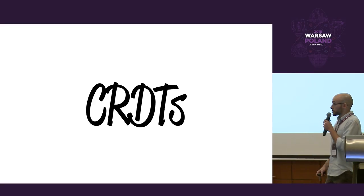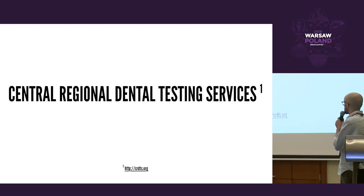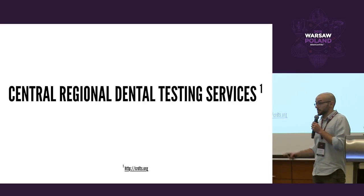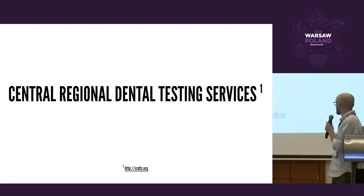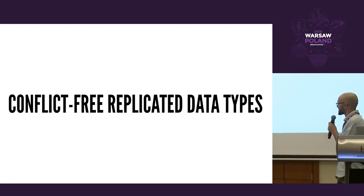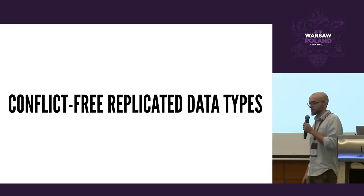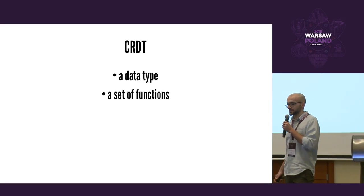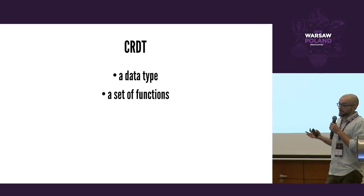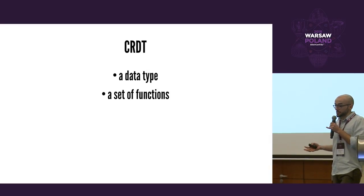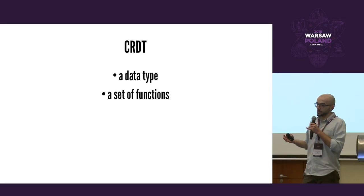I didn't have to look far and I found CRDTs — which, as a first search result on Bing might suggest something else, but Google knows what CRDT stands for. Of course, these are Conflict-free Replicated Data Types. A CRDT is basically a data type, a data structure, and a set of functions to modify the values of that data type — which is what we do in Elixir every day.